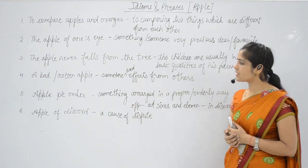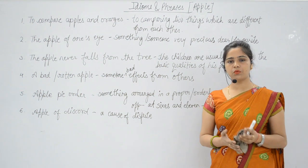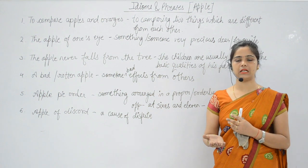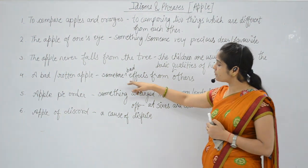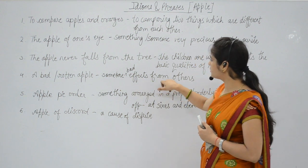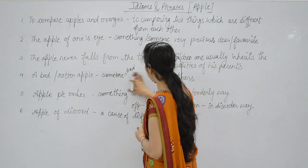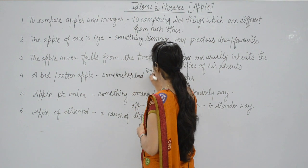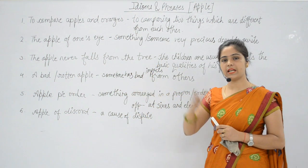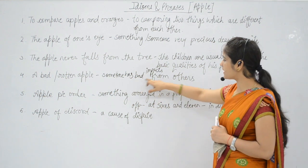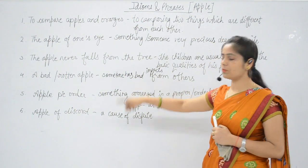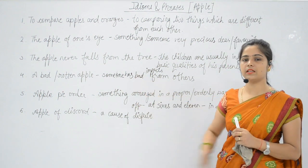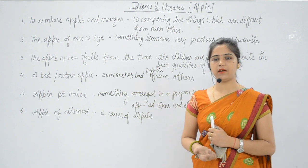Next, 'a bad apple or rotten apple' — this means someone who puts bad impacts or a wrong effect on others. If a person negatively influences the people around them, we call them a bad or rotten apple.